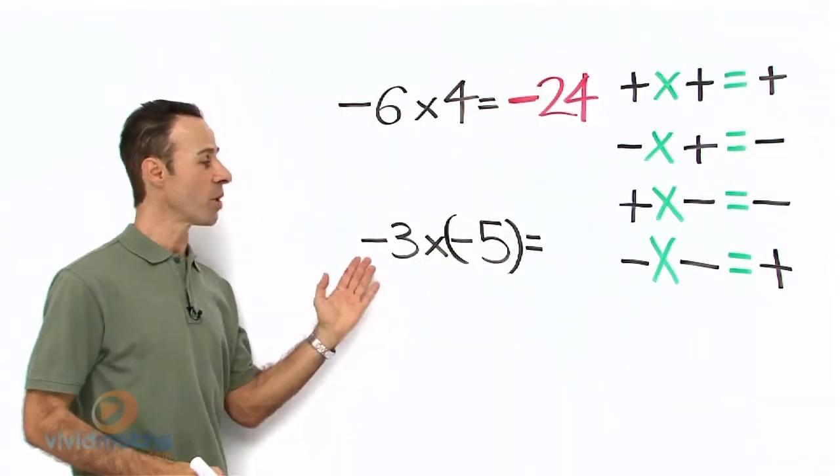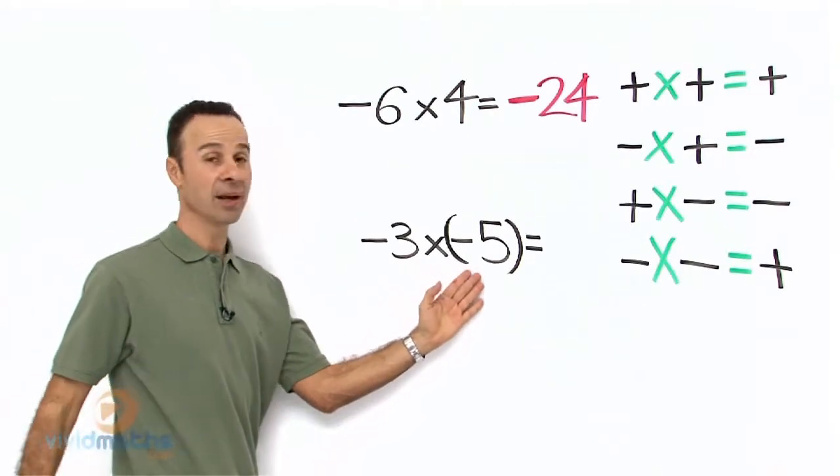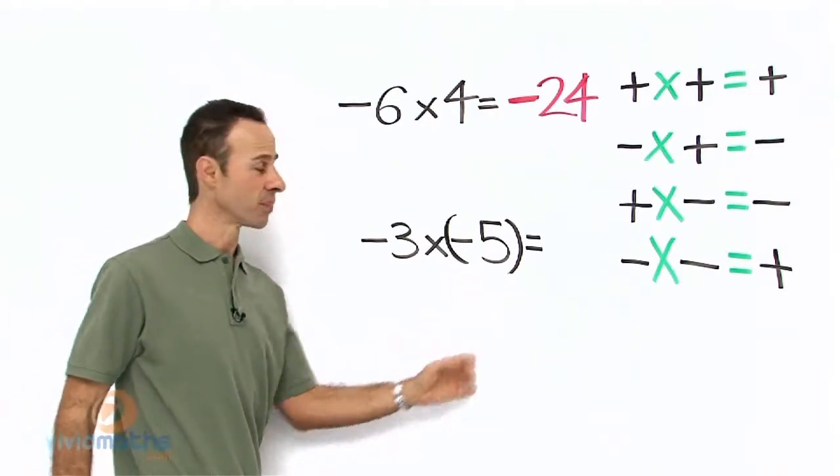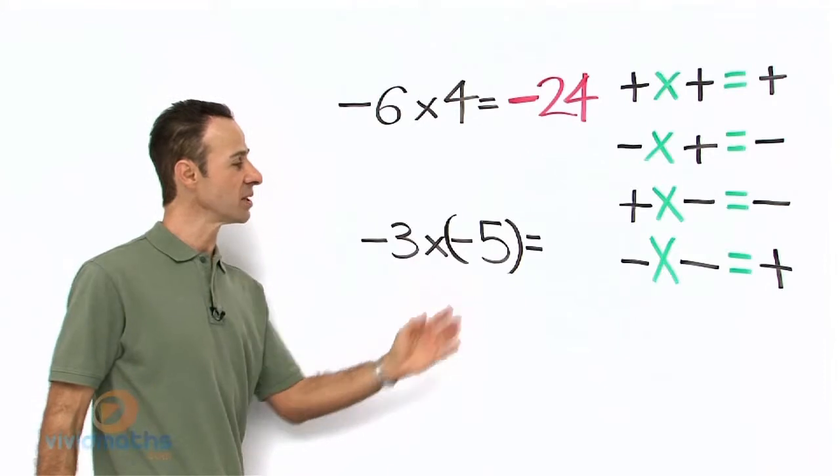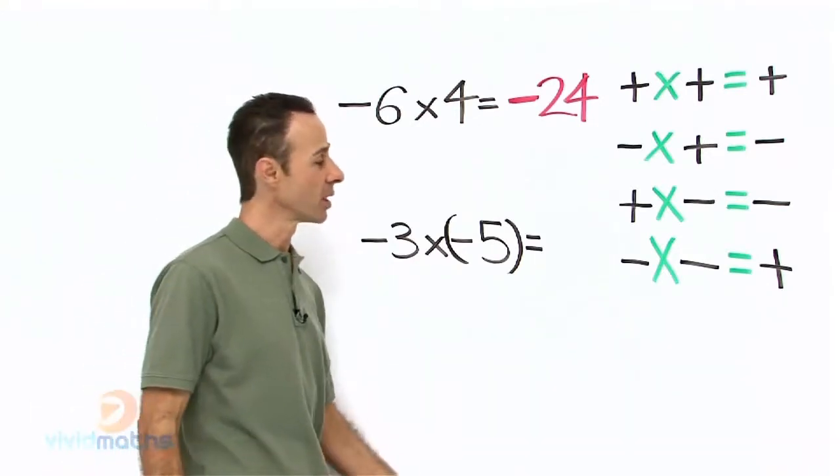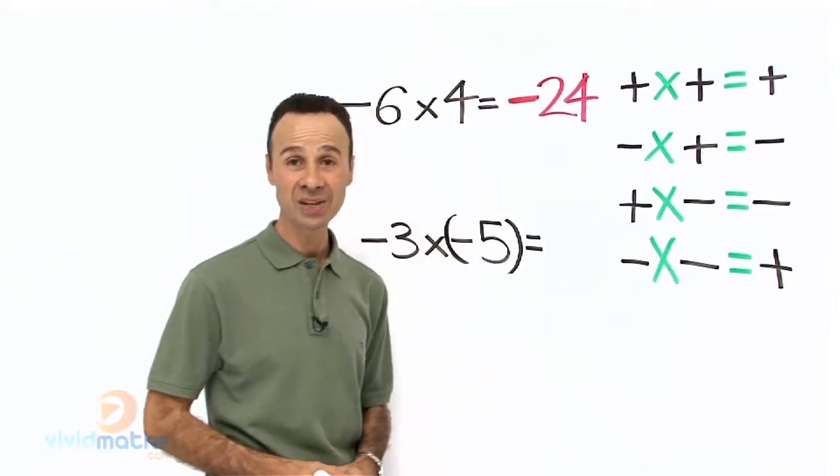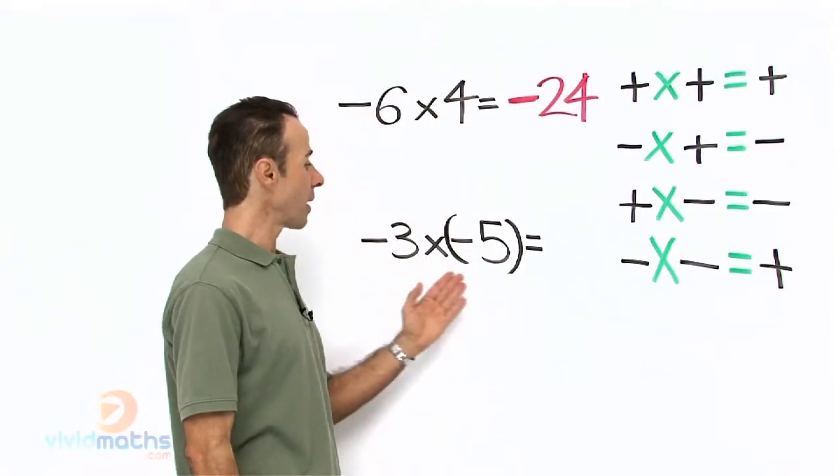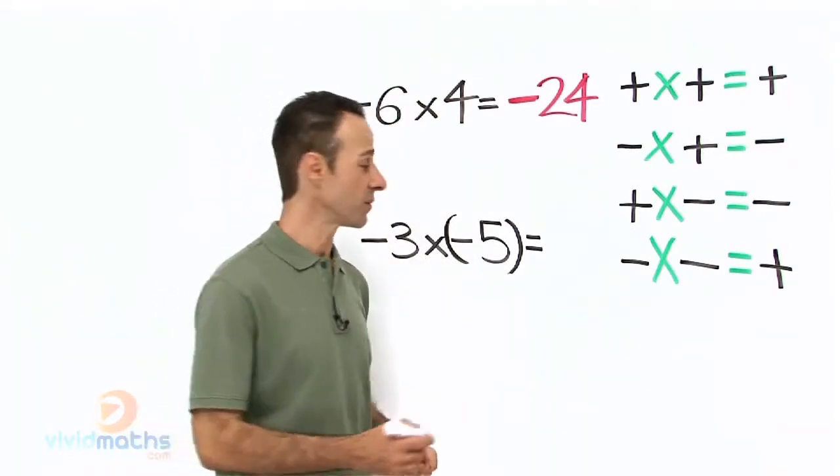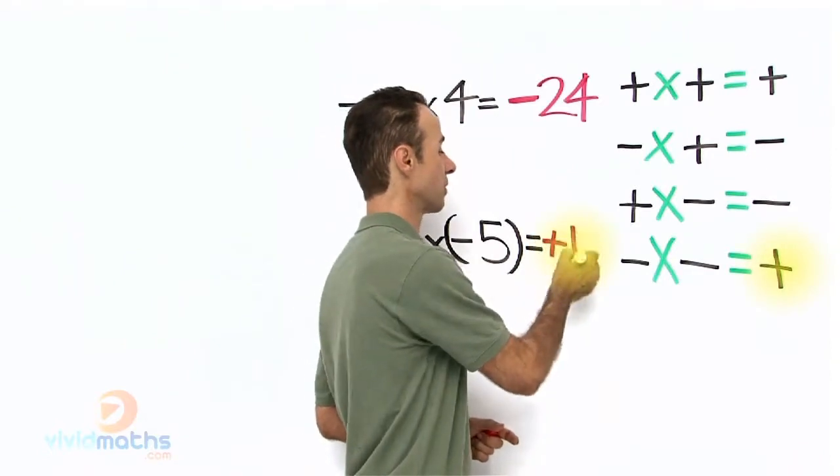Let's look at the next example. We have minus three times minus five. So we have a negative times a negative. Let's go to the system—negative and a negative gives us a positive, so it's going to be a plus answer. Three times five is fifteen, so it's plus fifteen.